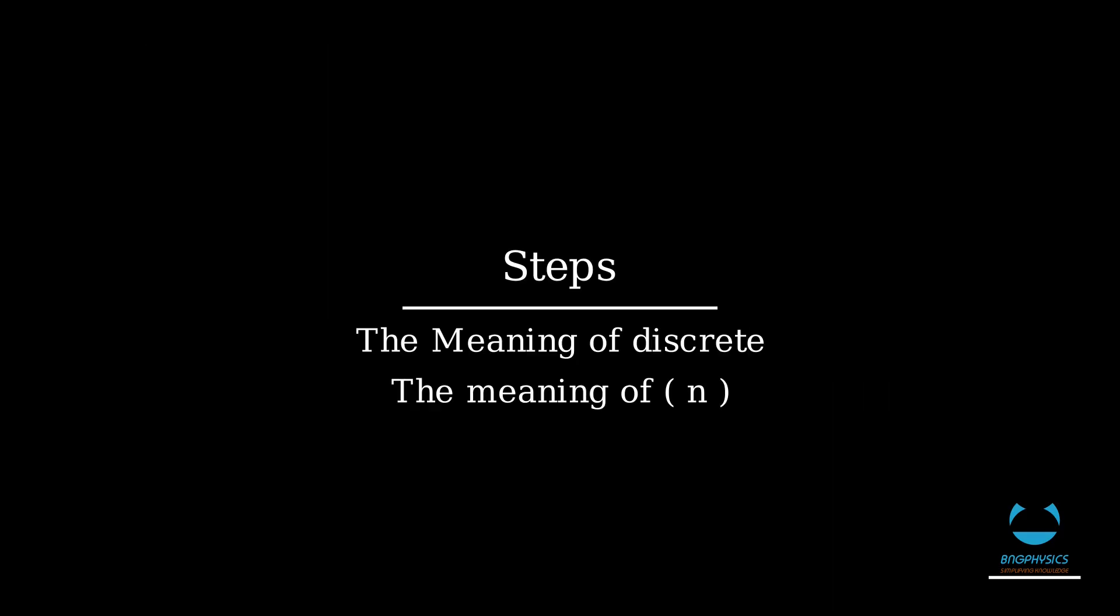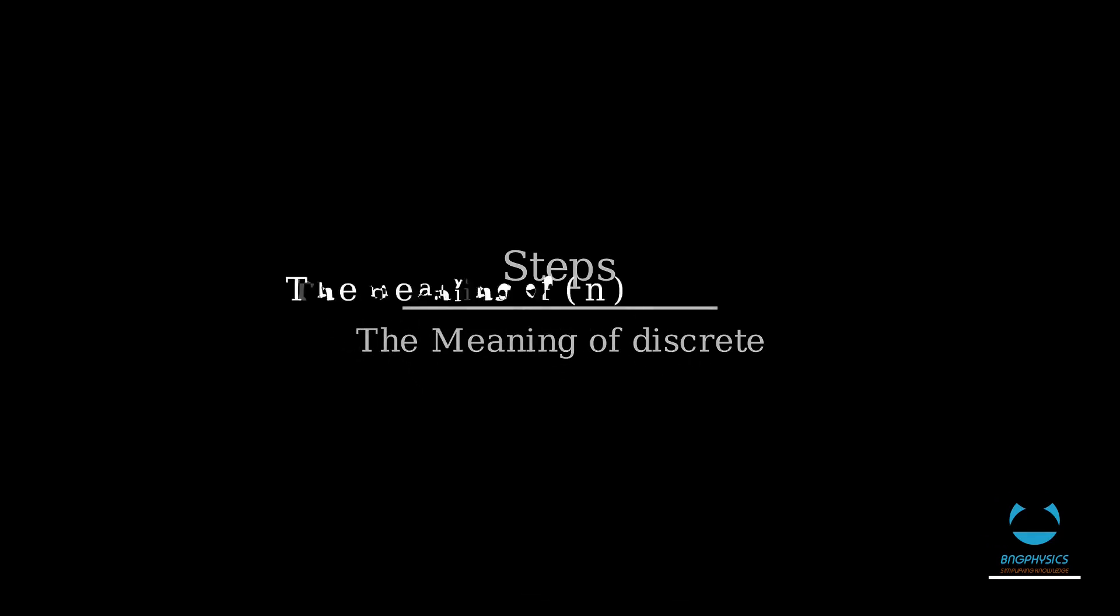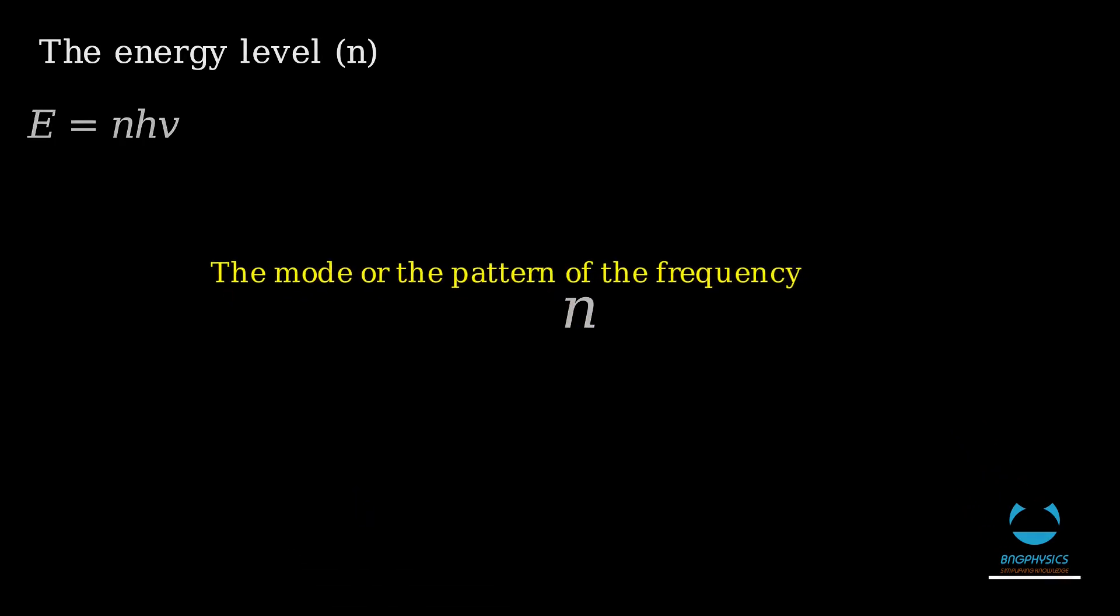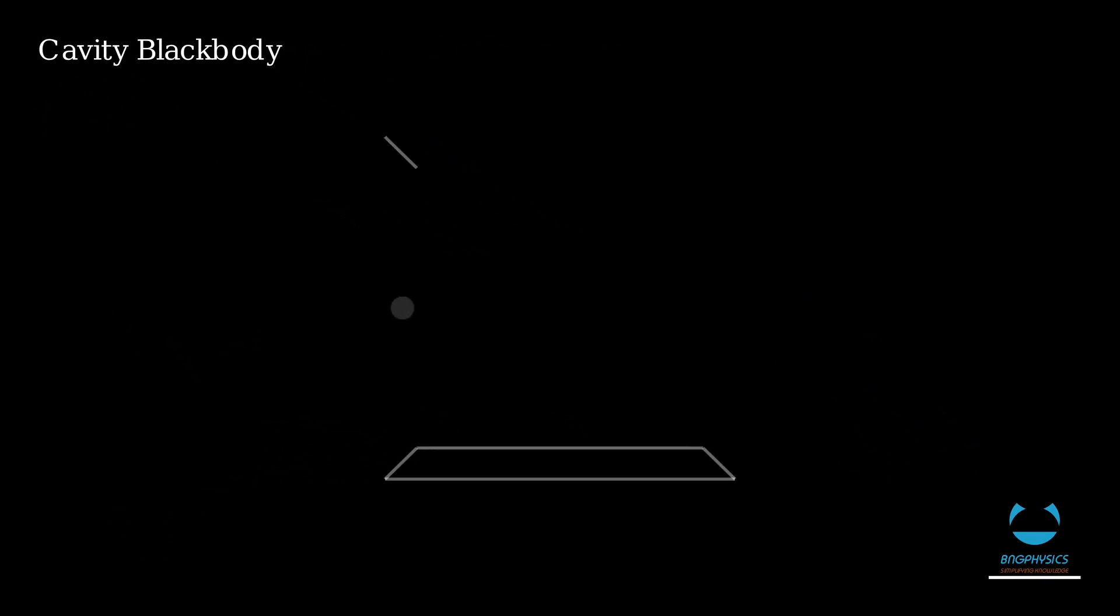Moving to the next part, the meaning of n in Planck's equation. n is simply the energy level if we are talking about atoms. But talking about radiation or waves in general means the mode or the pattern of frequency. In order to understand Planck's idea for n as the mode or pattern of frequency, let us walk through the cavity blackbody experiment that Planck used to explain the puzzling behavior of radiation and show that energy is quantized.